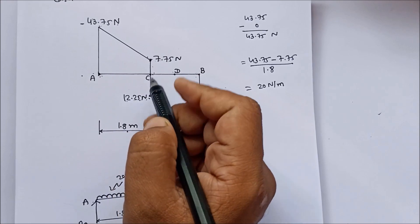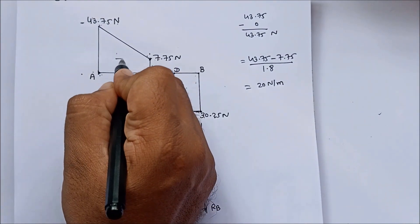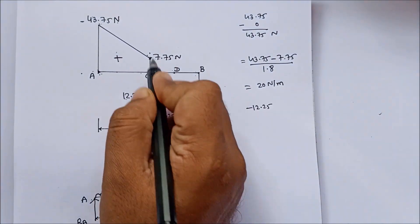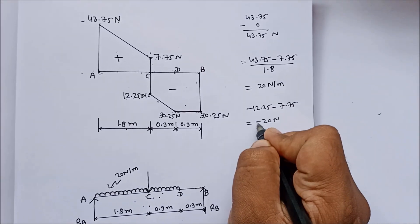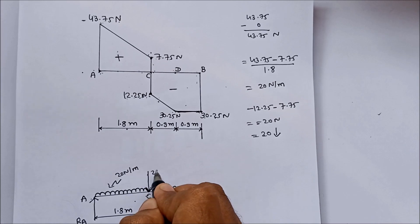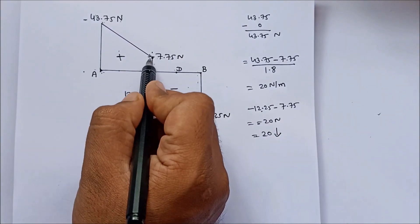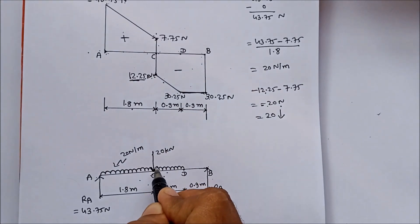How do we calculate the point load at C? Using final minus initial. The portion below the line is taken as negative and above as positive. Final condition is minus 12.25, initial is 7.75. So point load equals minus 12.25 minus 7.75, giving minus 20 N. The negative sign shows 20 N acts downward. So at point C there is a 20 N point load acting downward.